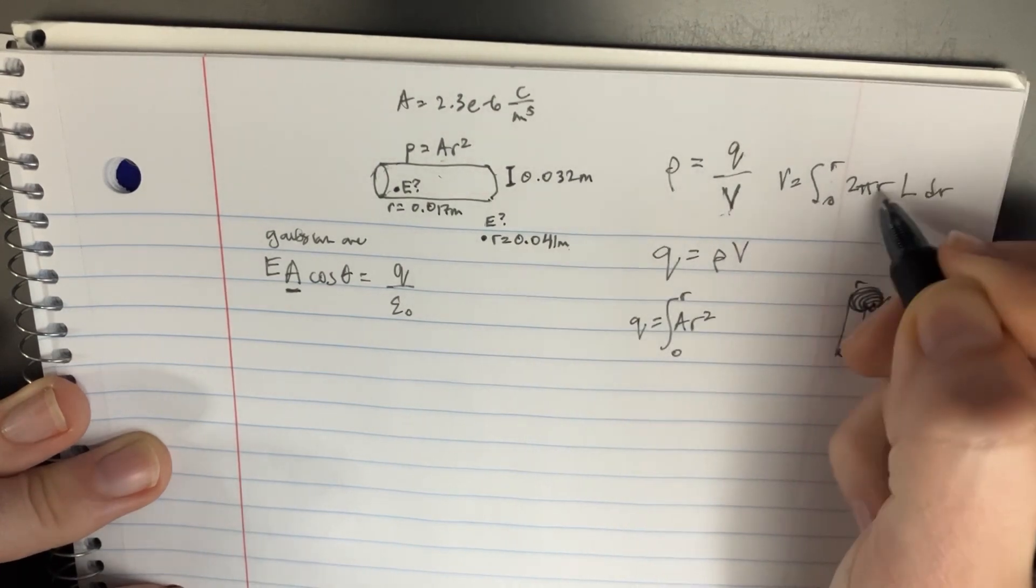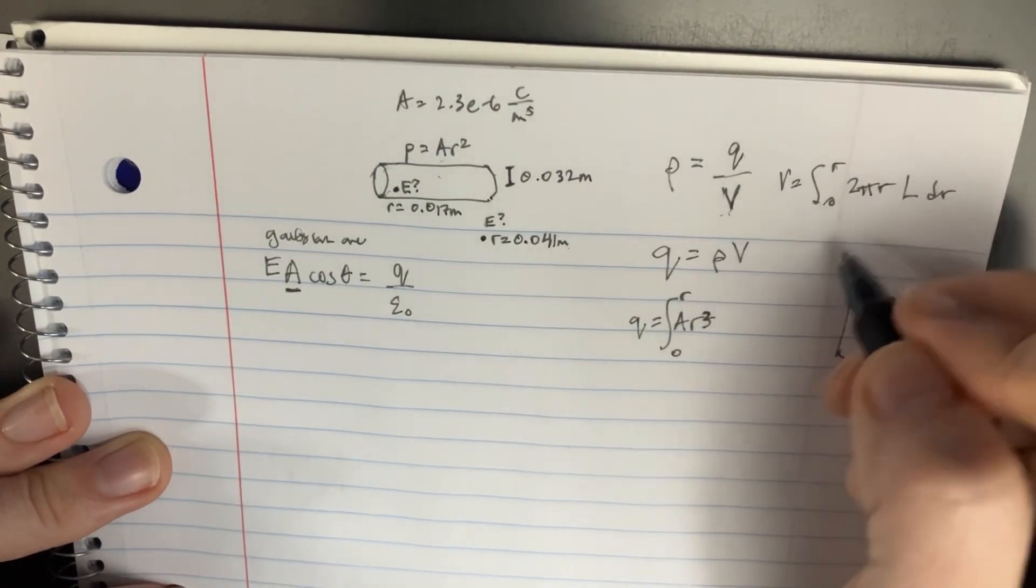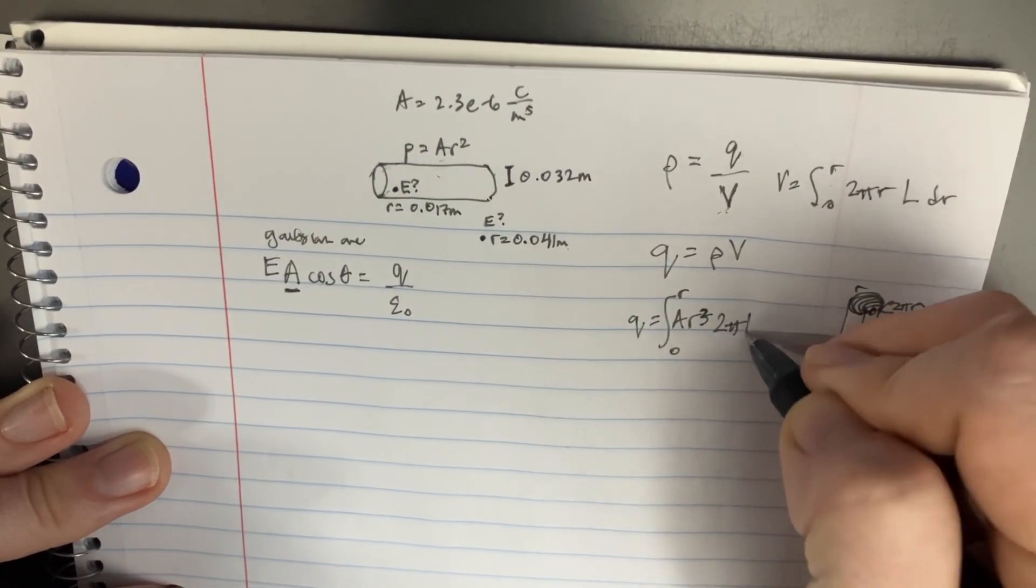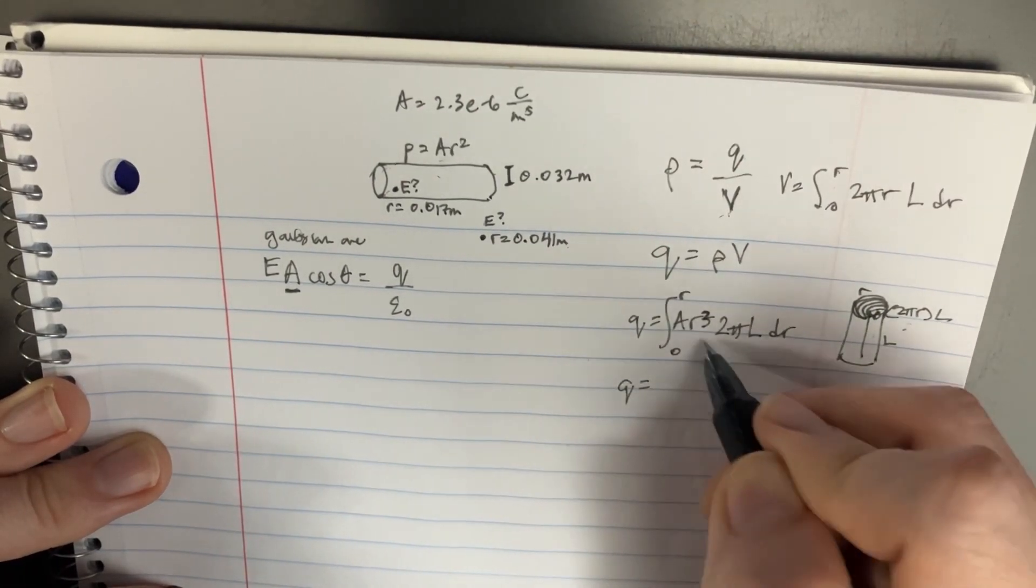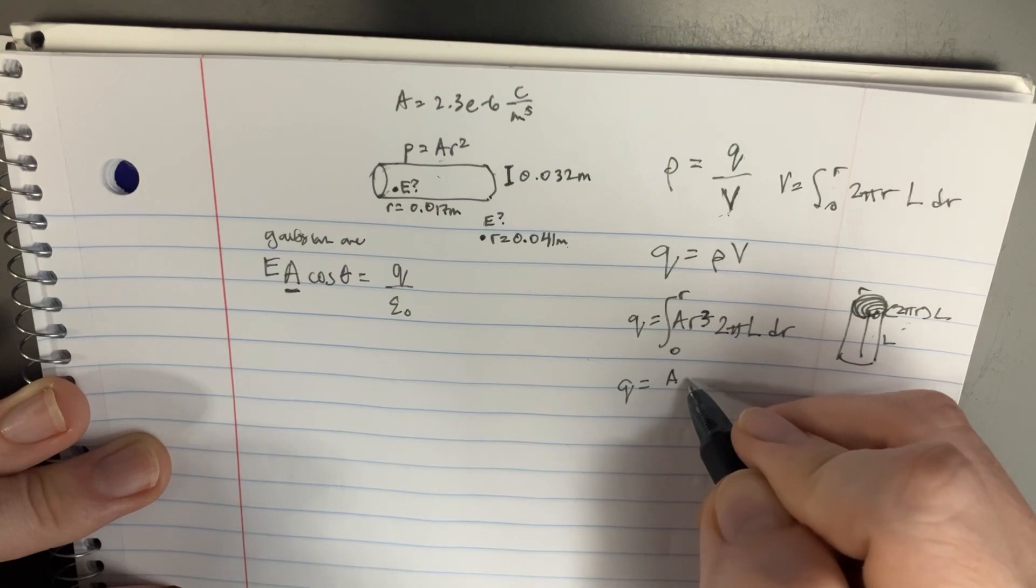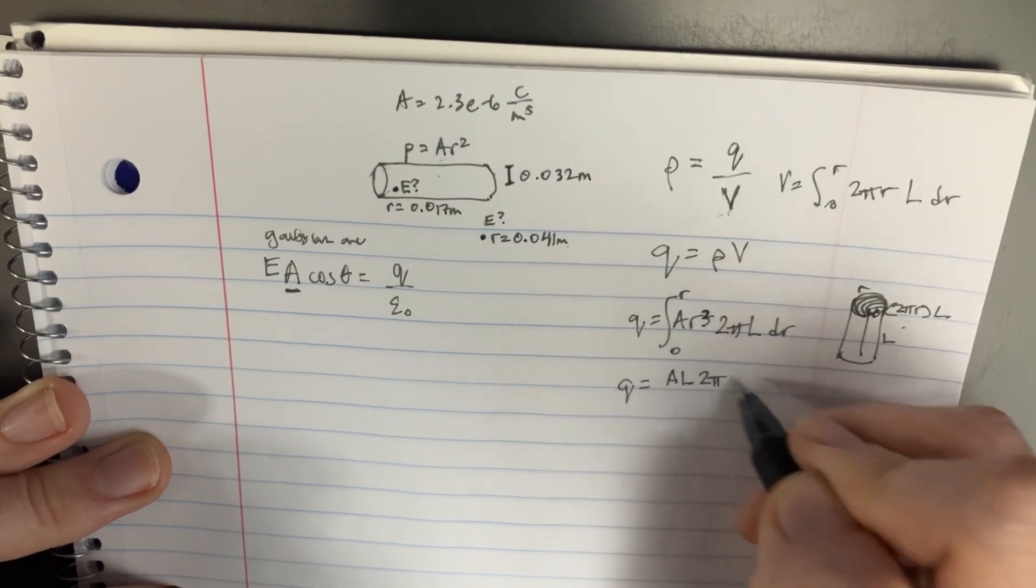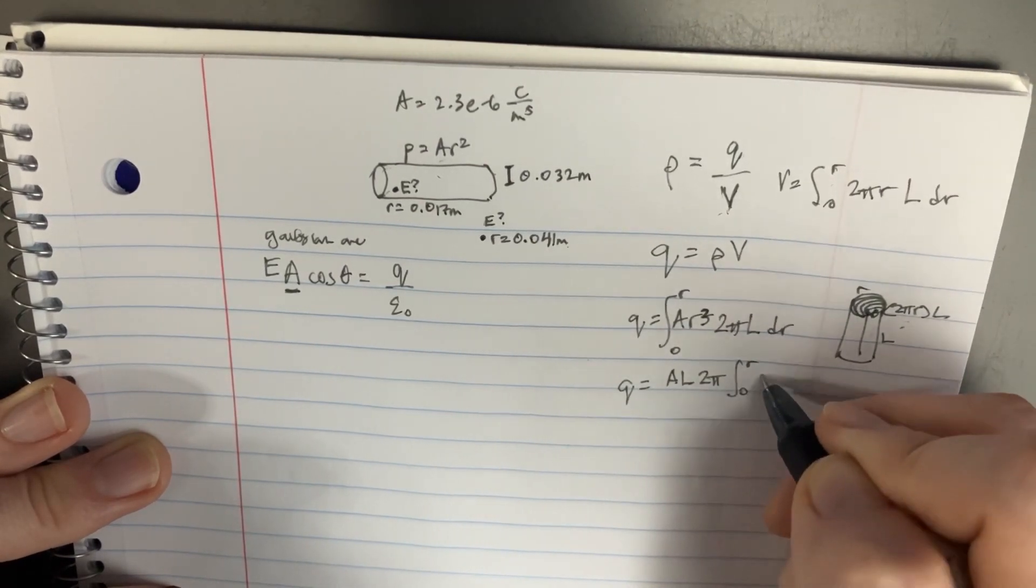So we're going to go zero to R. There's one R there. We'll turn that into a three. We've got the 2πL dr. We're going to pull out all the constants. So it's just going to be A, L, 2π, and then zero to R, r to the third.